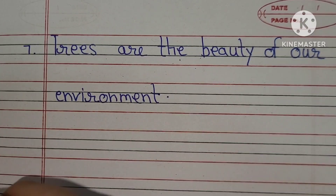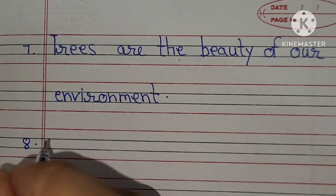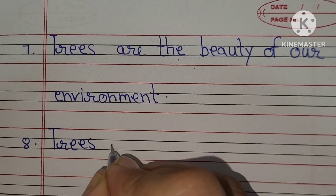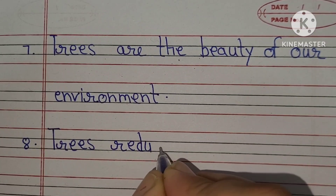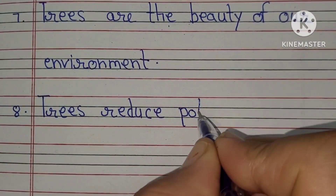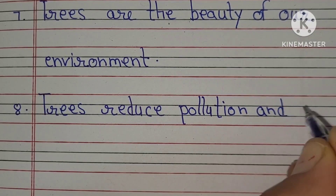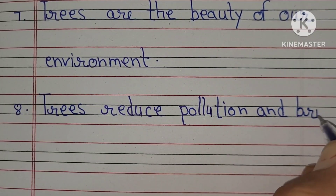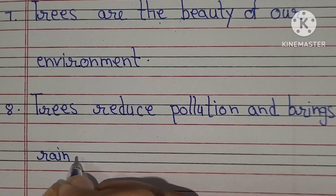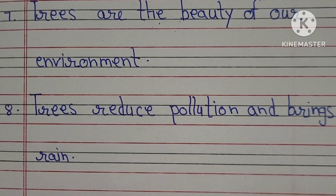Number seven: Trees are the beauty of our environment. Number eight: Trees reduce pollution and bring rain.